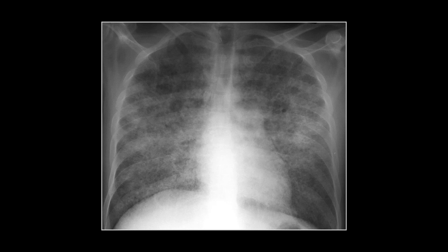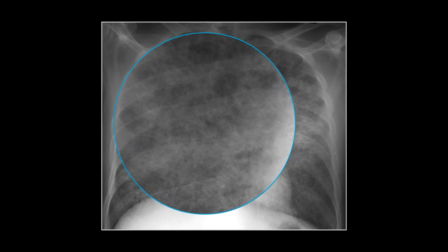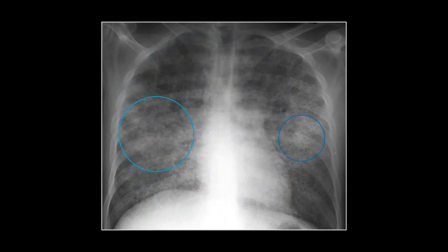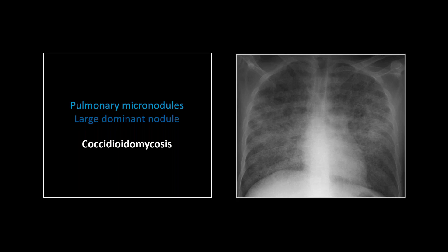Our next case also has such extensive involvement that in the center you've just got white, so look to the edge to determine the pattern. There's also a dominant nodule here, which is diagnostically helpful. Looking to the edges, you can appreciate this is actually micronodularity — miliary spread. Tumors like thyroid and melanoma can have a similar appearance, but you're typically thinking TB and cocci. That's especially the case when there's a giant dominant nodule suggesting an original focus of infection. To distinguish TB from cocci, look for mediastinal calcifications: with TB you'll probably have them; with cocci you almost certainly won't. This is a case of coccidioidomycosis with miliary spread.